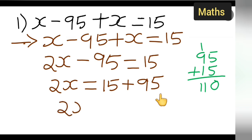So you will have to write down 2x equals 110. What you're going to get is x equals 110 upon 2.